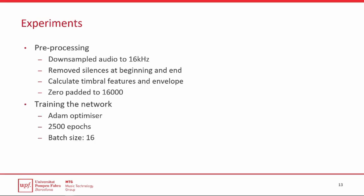To pre-process the audio, we downsampled it to 16,000 Hz, we removed the silences at the beginning and the end of the sound, and we calculated then the timbral features and the envelope. We then zero-padded the sounds to 16,000 samples which corresponds to 1 second. To train the network, we used the Adam optimizer and trained the networks for 2500 epochs using a batch size of 16.